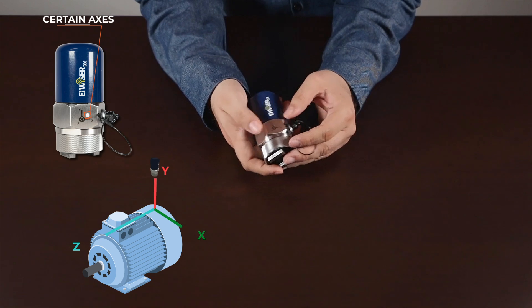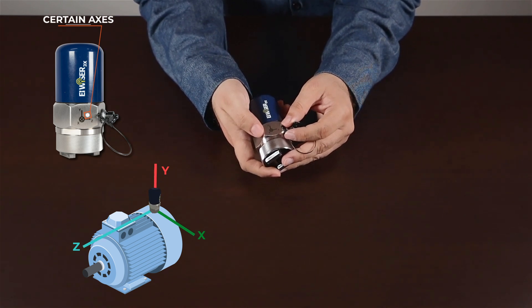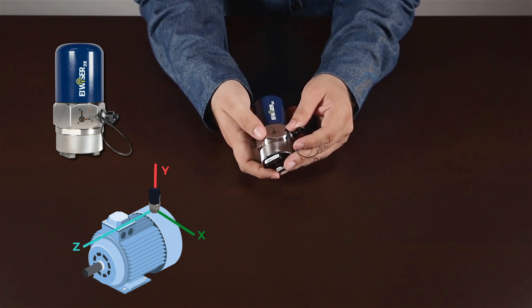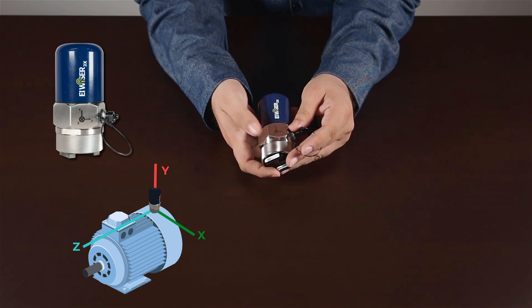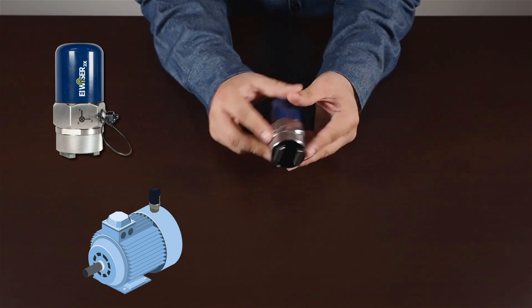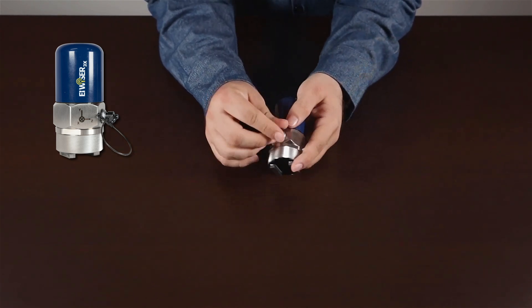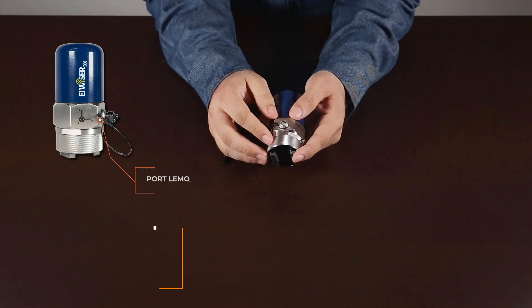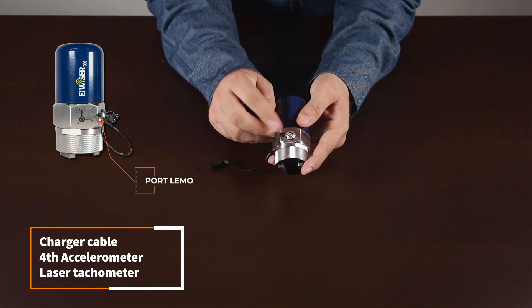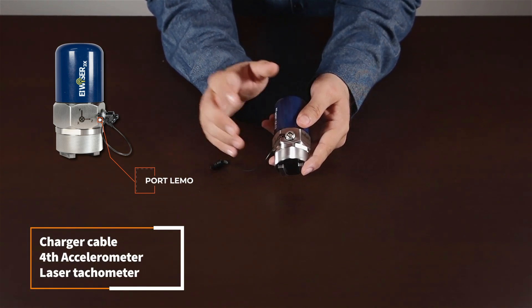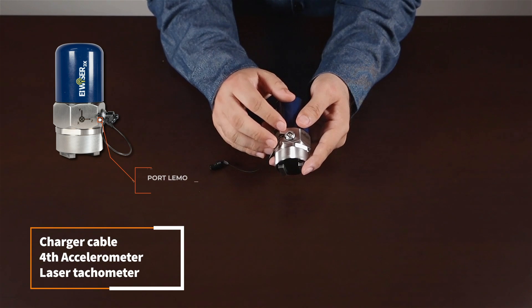We can also find the axes. These axes indicate the direction the accelerometers are pointing to. It is very important that when you place it on the machine, make sure your axes are correctly oriented. We can also find another port here. This port can connect the charging cable, our fourth accelerometer which can serve as a reference, and a laser tachometer.